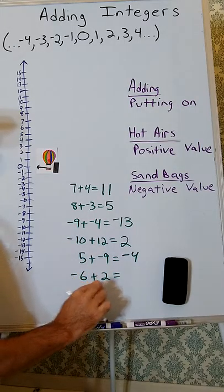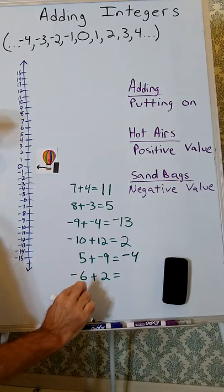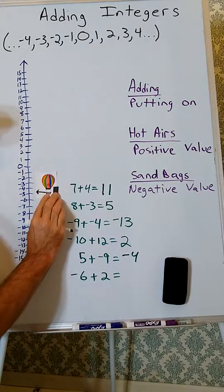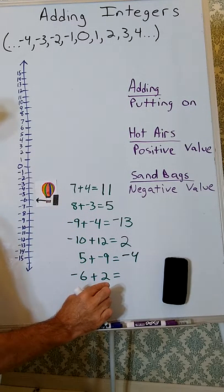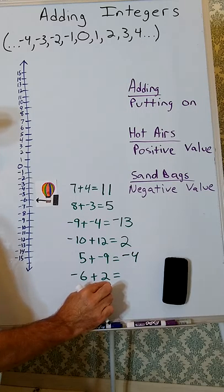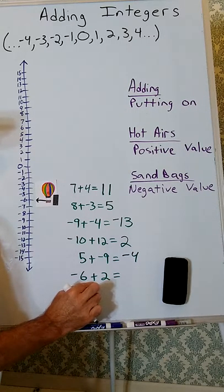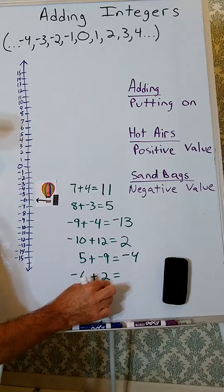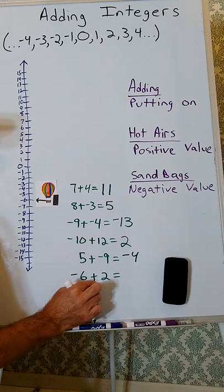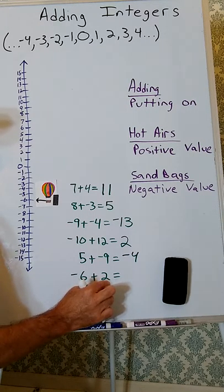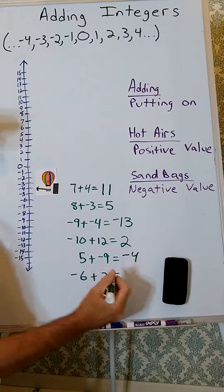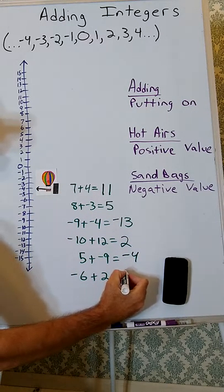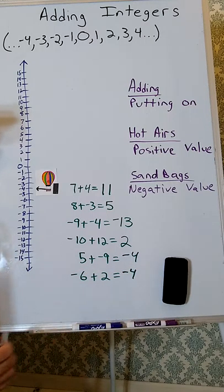And finally, negative 6 plus 2. Those 6 sandbags cause the balloon to go down to negative 6, so that's where we'll start. We're adding 2, and this 2 is positive, so we're adding or putting on 2 hot airs. The balloon will go up 2. So negative 6 plus 2 is negative 4.